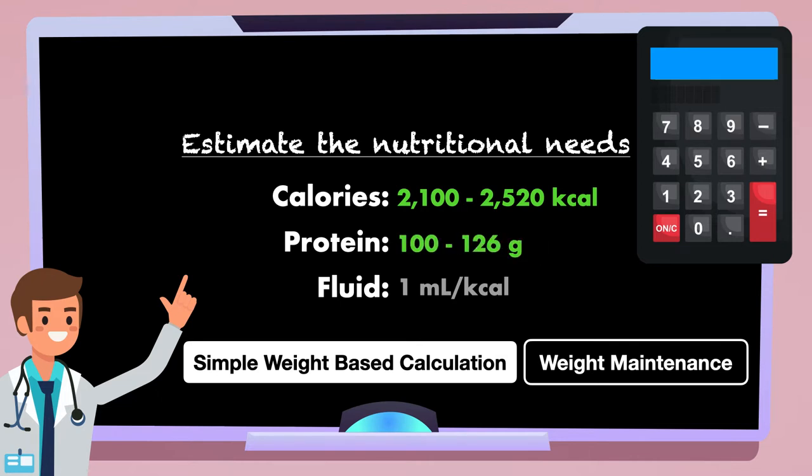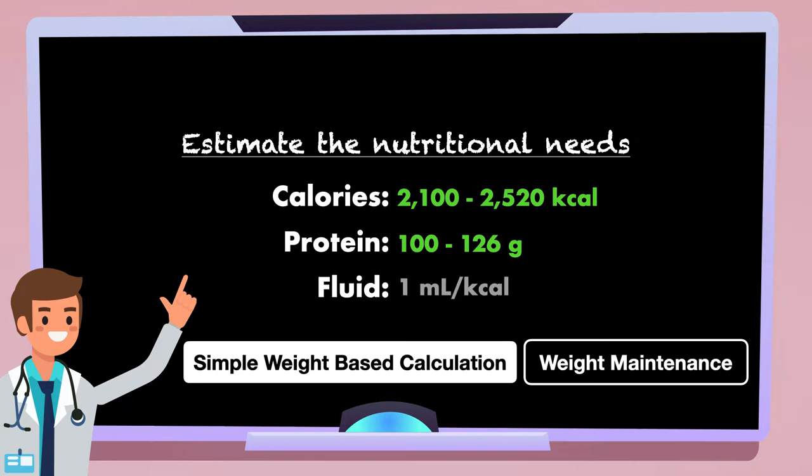There is no need for a calculator to do the fluid. We'll just do 1 milliliter per calorie, or 2100 to 2520.